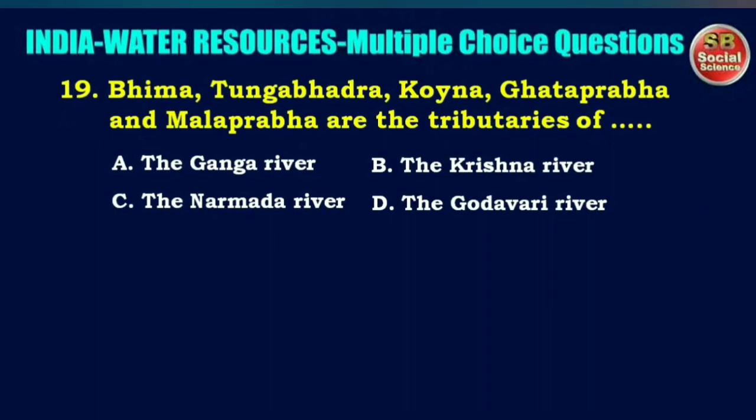Next question: Bheema, Tungabhadra, Koyna, Ghataprabha and Mallaprabha are the tributaries of — options are the Ganga river, the Krishna river, the Narmada river, or the Godavari river. The right answer is option B: the Krishna river.